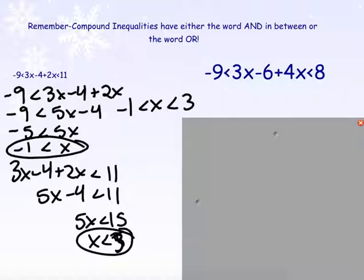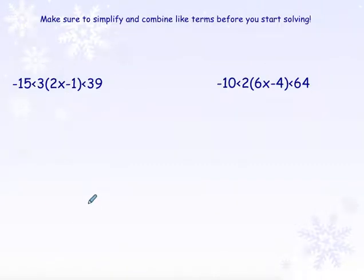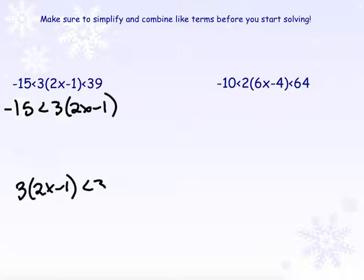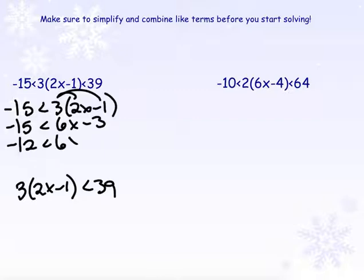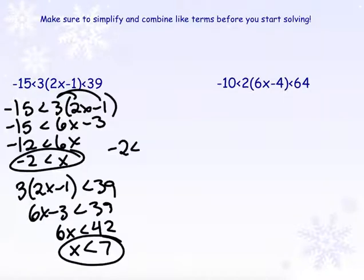The same process applies here — split into two halves, simplify, combine like terms, solve for x, and put it back together. For negative 15 is less than 3 times (2x minus 1) is less than 39: first half — negative 15 is less than 6x minus 3; add 3 to get negative 12 is less than 6x; divide by 6, so negative 2 is less than x. Second half — 6x minus 3 is less than 39; add 3 to get 6x is less than 42; divide by 6, so x is less than 7. Combined: negative 2 is less than x is less than 7.